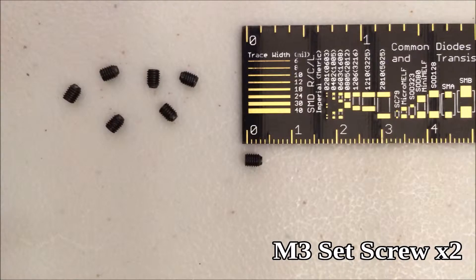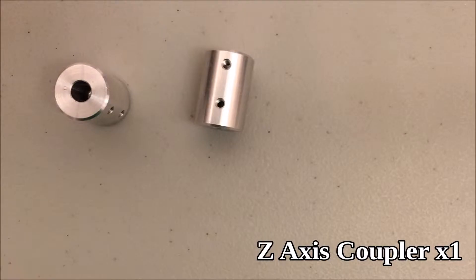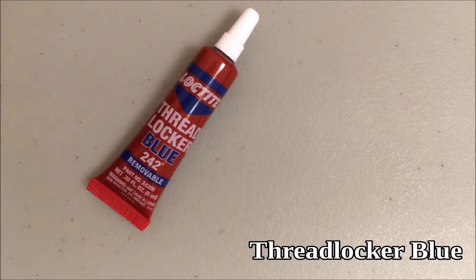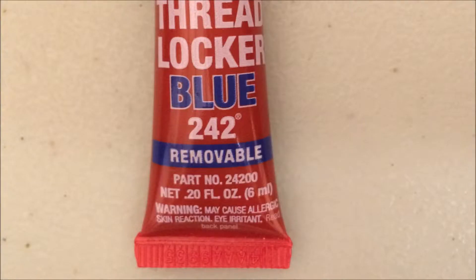The installation takes two M3 set screws, the Z axis coupler, and the Acme threaded rod. We'll be using Threadlocker Blue again, and if you didn't watch the previous video with Threadlocker, it's very important that you use Threadlocker Blue because it is removable, and someday you may have to take this apart.